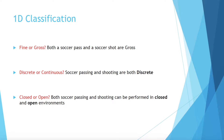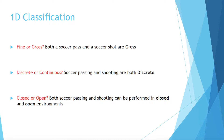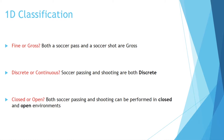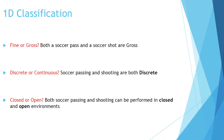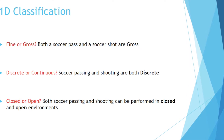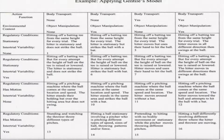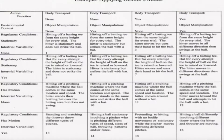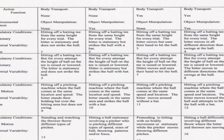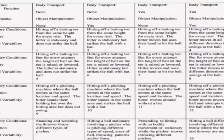For our classification, we identified that both the soccer pass and shot are gross motor skills and also both are discrete. Both soccer passing and shooting can be performed in a closed or open environment. Applying Gentile's model, we identified that in a game situation it would be number 16.